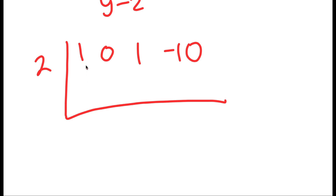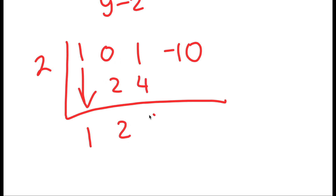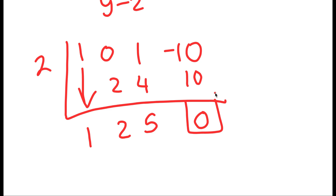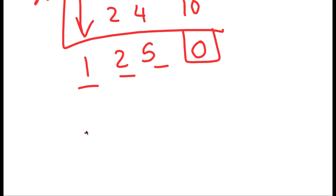If you're still confused by this, you should look up a video on synthetic division. I'm going to first start by moving down my 1. 2 times 1 is 2; 0 plus 2 is 2; 2 times 2 is 4; 1 plus 4 is 5; 2 times 5 is 10; negative 10 plus 10 is 0. So I have a remainder of 0, and I'm going to use these as my coefficients. So I get y squared plus 2y plus 5.